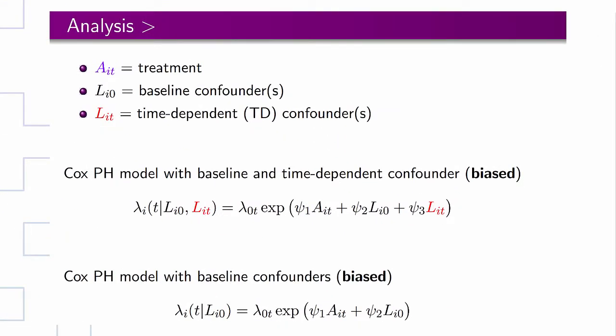Let us see how the presence of time-dependent confounders affect our analysis strategy. If we fit a Cox proportional hazards model with the baseline confounder L sub 0 and time-dependent confounder L sub t, the analysis result will be biased since L sub t is an intermediate variable and we shouldn't control for it. If we fit the Cox model with just the baseline confounder L sub 0, the analysis is still biased because L sub t is also a confounder and we need to control for confounders.